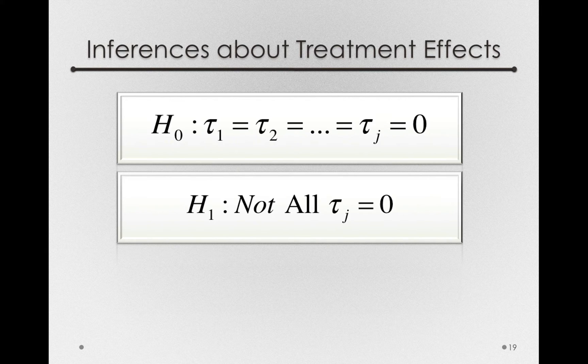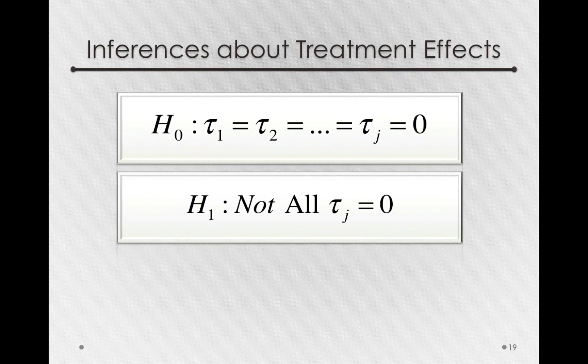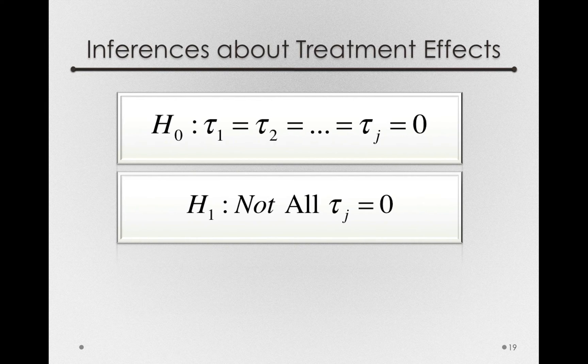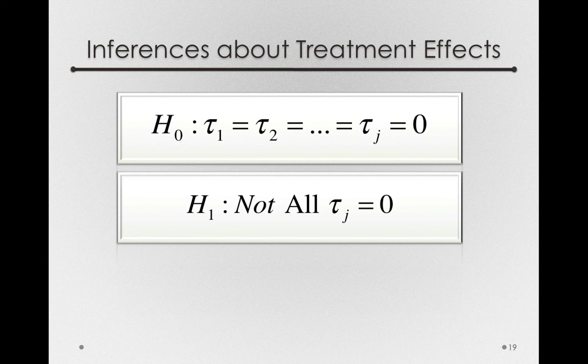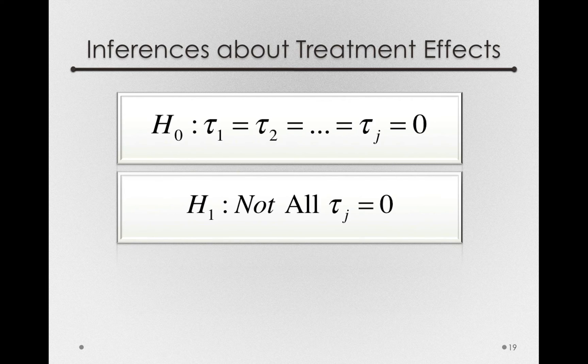Let's pause and think about this. All those taus are varying around zero. That is, the treatment offsets are formed as a deviation from the grand mean. Another way of stating the null hypothesis is that the variance of the taus is equal to zero.